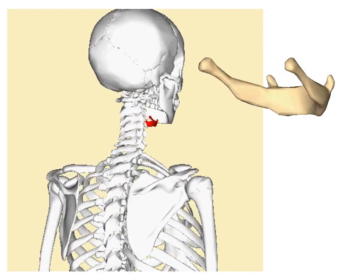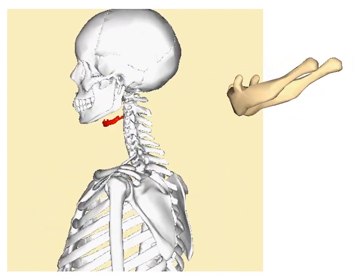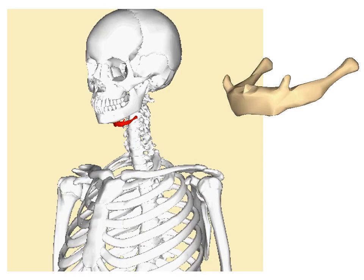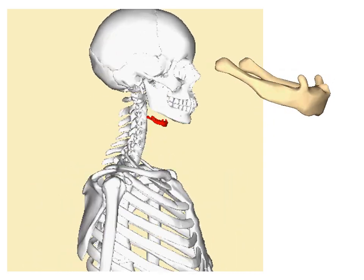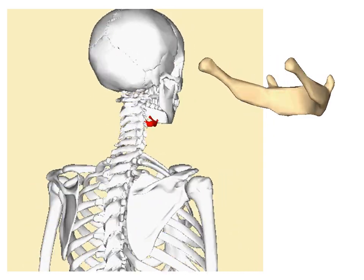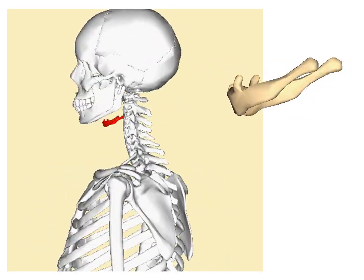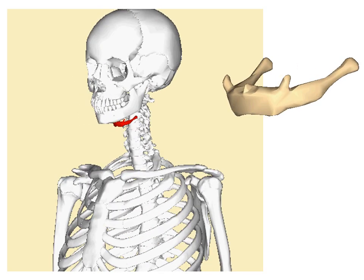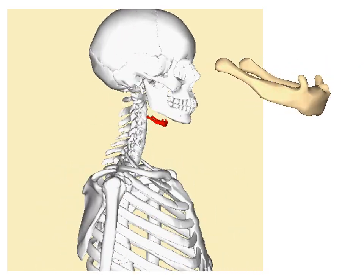This bone is located in the neck and suspended below the mandible by muscles and ligaments. It has a U shape and resembles an edentulous mandible, although it is gracile and twice as small as the atlas.